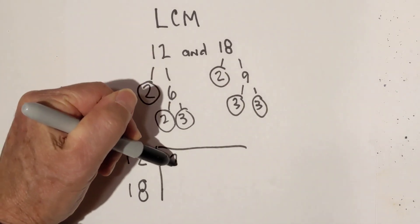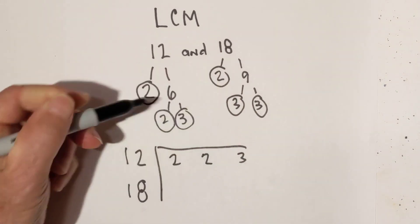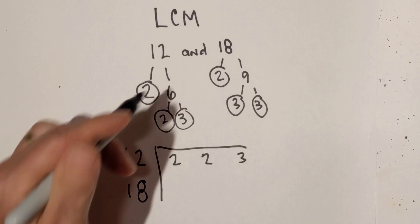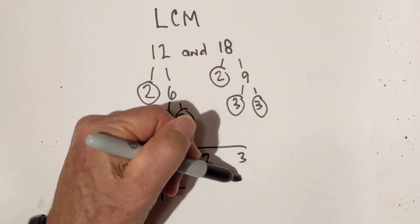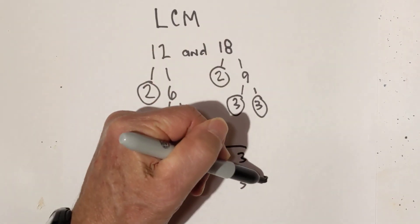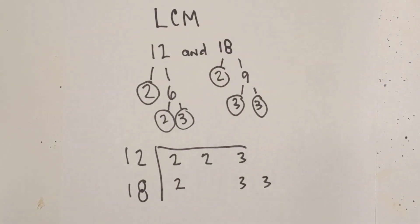So I'm going to write the numbers here, the prime numbers for 12. Then I'm going to write the prime numbers for 18. And I'm going to skip this 2 because I have a 3 here and then an extra 3.